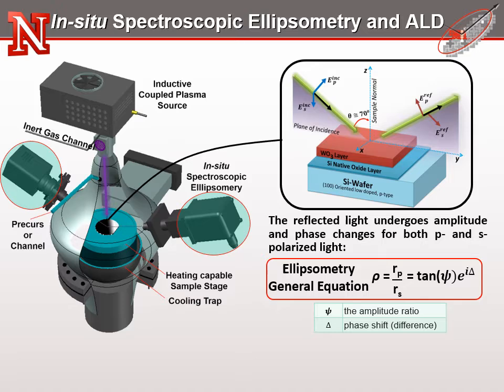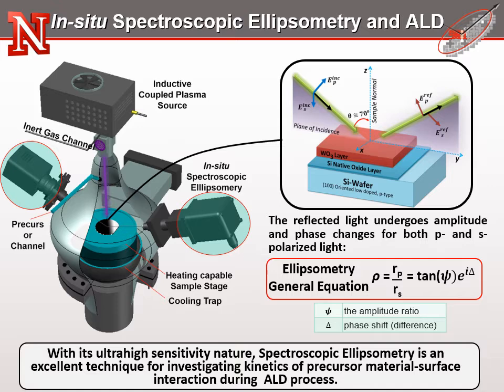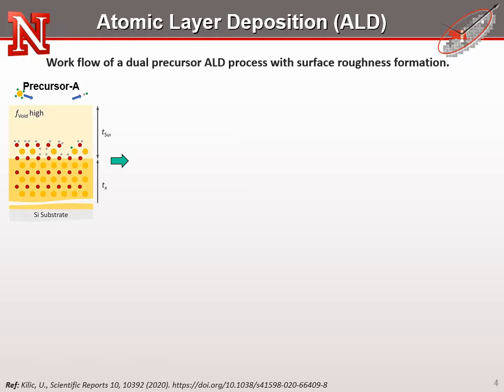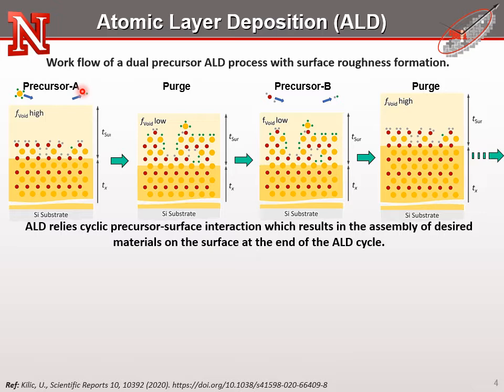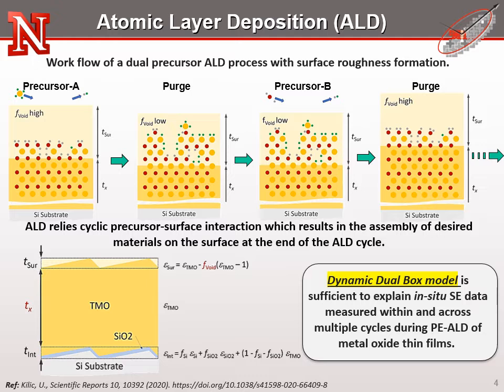While tangent psi is the amplitude ratio upon reflection, delta is known as the phase shift. With its ultra-high sensitivity nature, spectroscopic ellipsometry is an excellent technique for investigating the kinetics of precursor material surface interaction during the ALD process. Atomic layer deposition is a thin film deposition technique based on sequential use of a gas phase chemical process. The majority of ALD reactions use two chemicals called precursors. These precursors sequentially react with the surface of a material one at a time in a self-limiting manner and are separated from each other by a purging mechanism. The cyclic precursor surface interaction results in the assembly of the desired materials on the surface at the end of each ALD cycle. Spectroscopic ellipsometry is an excellent tool to monitor such complex but discretized surface modifications.